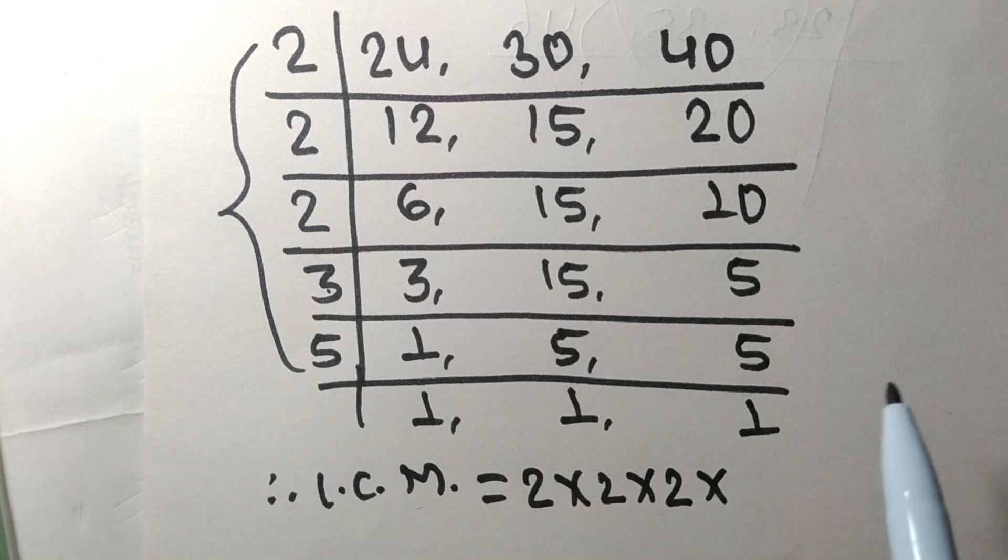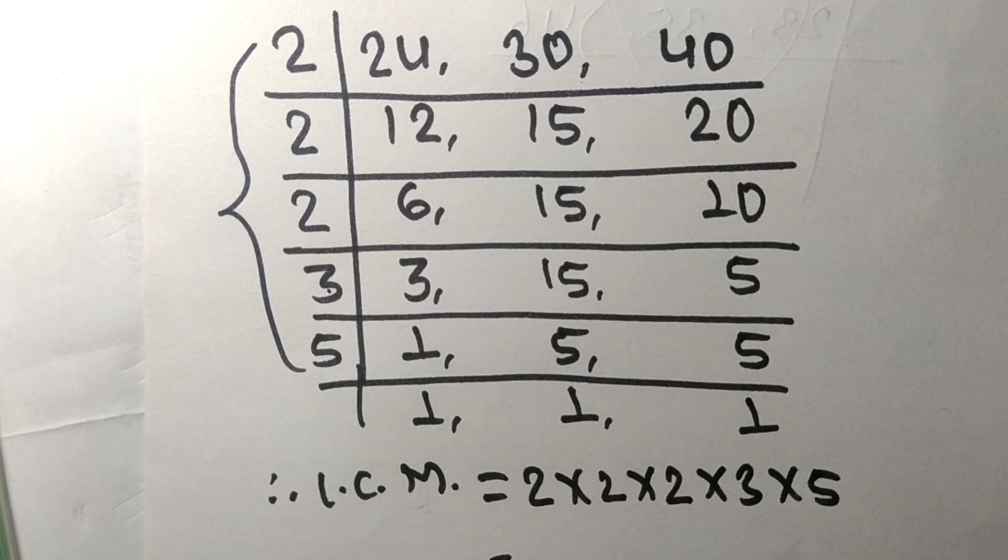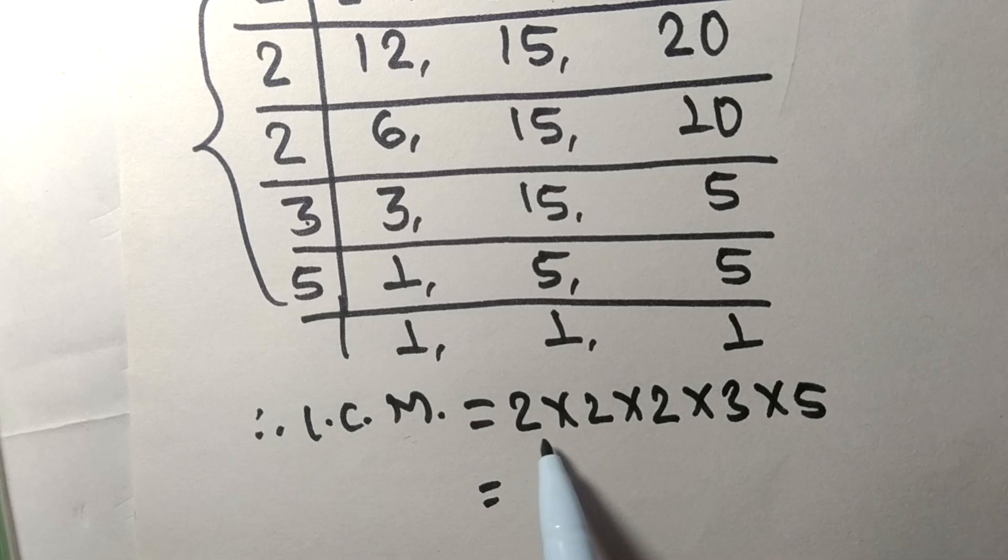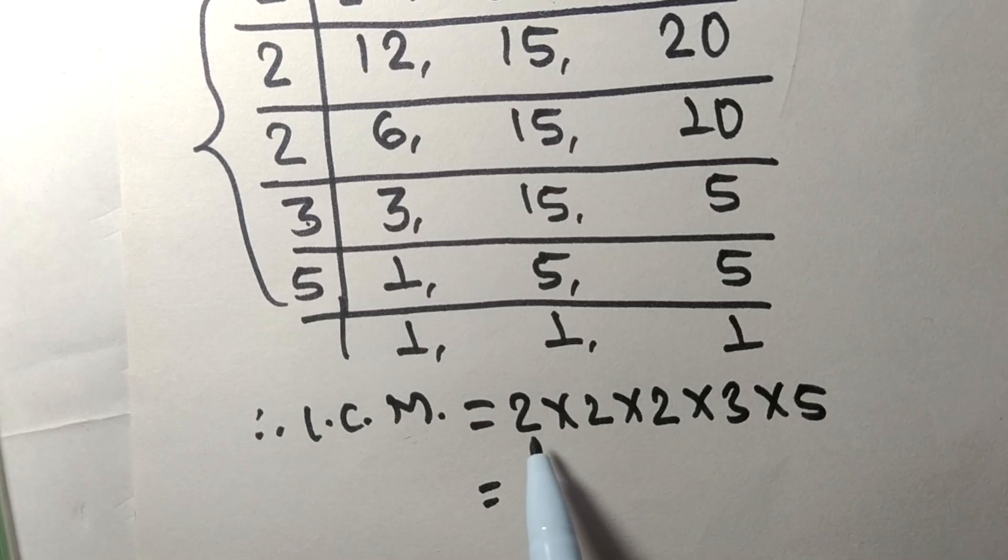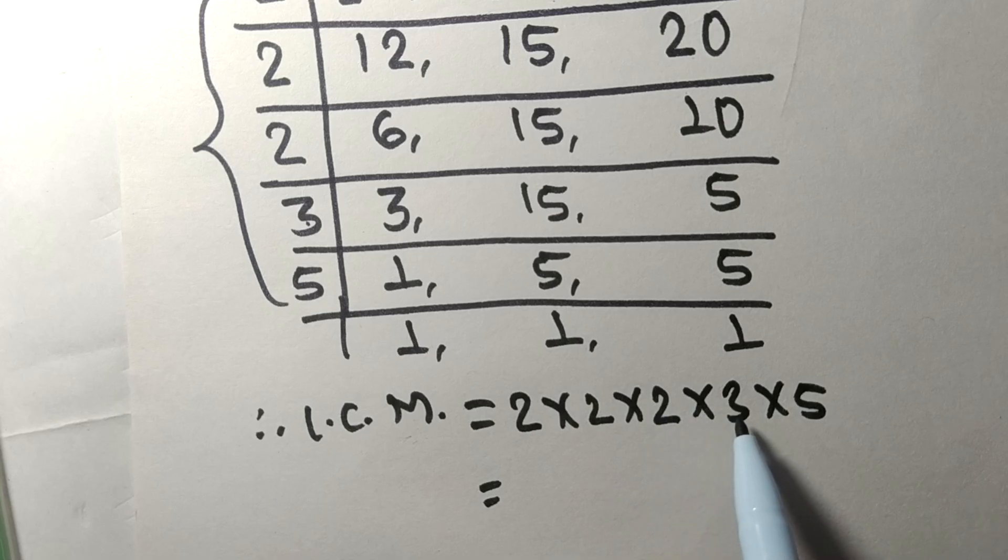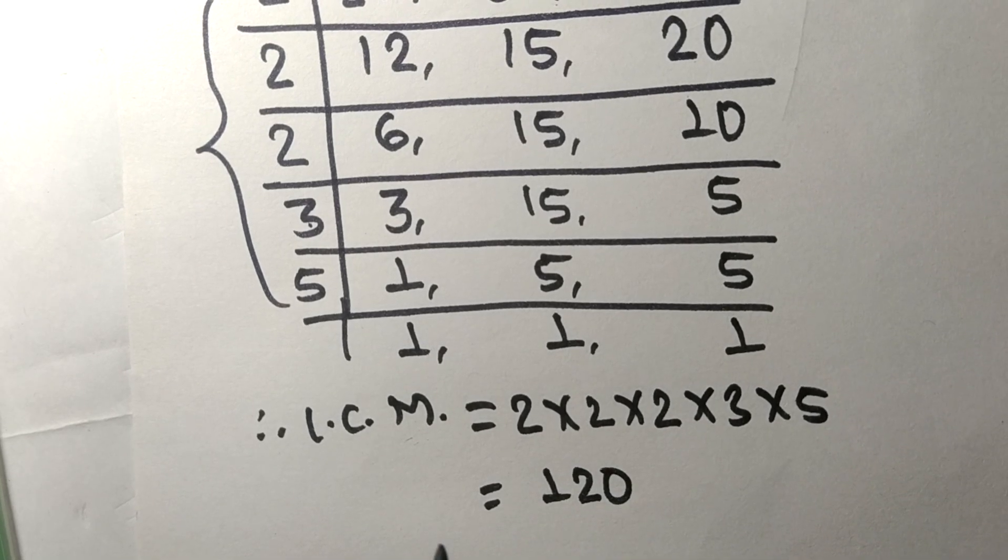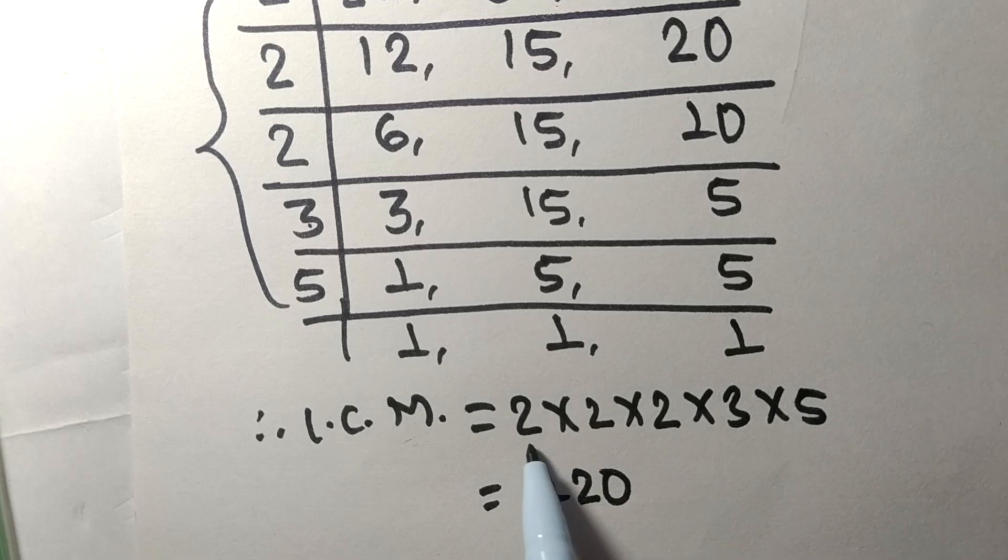By multiplying all these numbers: 2 times 2 means 4, 4 times 2 means 8, 8 times 3 means 24, 24 times 5 means 120.